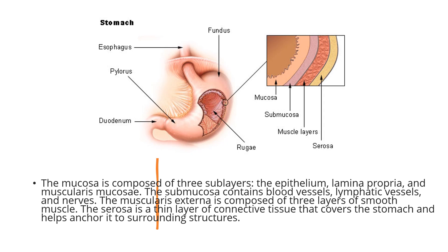These cell types include chief cells, parietal cells, and mucus cells. Chief cells produce pepsinogen, an enzyme that helps in the breakdown of proteins. Pepsinogen is converted into pepsin by the acidic environment in the stomach, while the parietal cells produce hydrochloric acid and intrinsic factor, which is necessary for the absorption of vitamin B12.